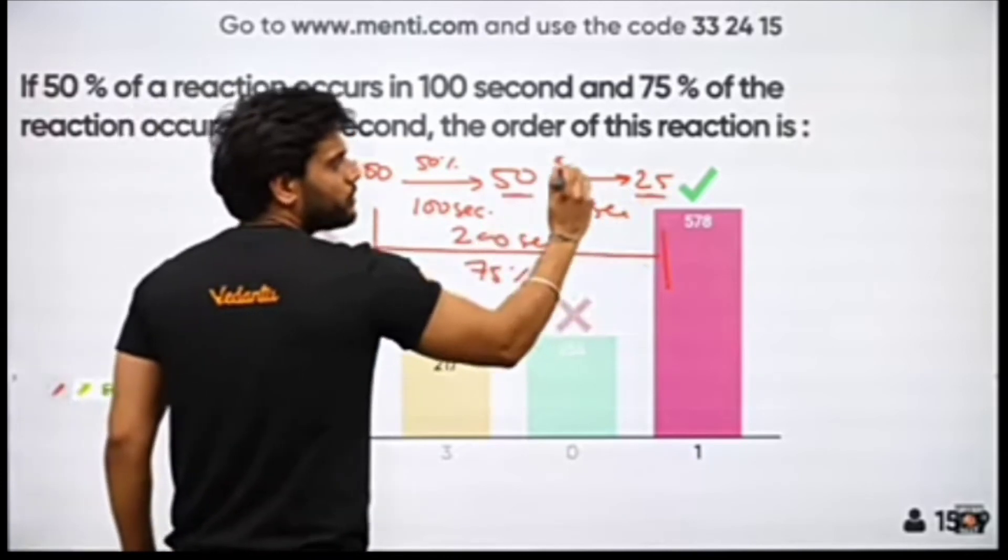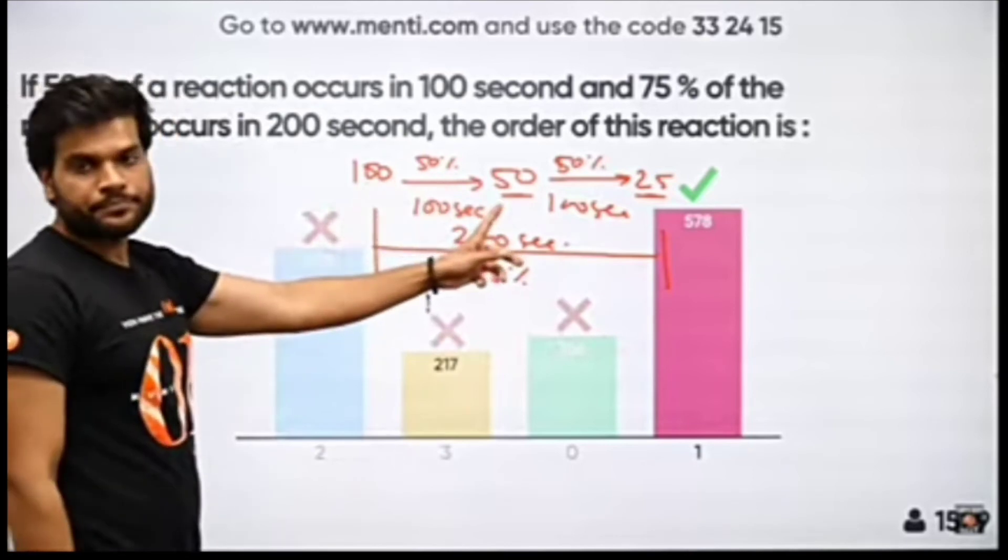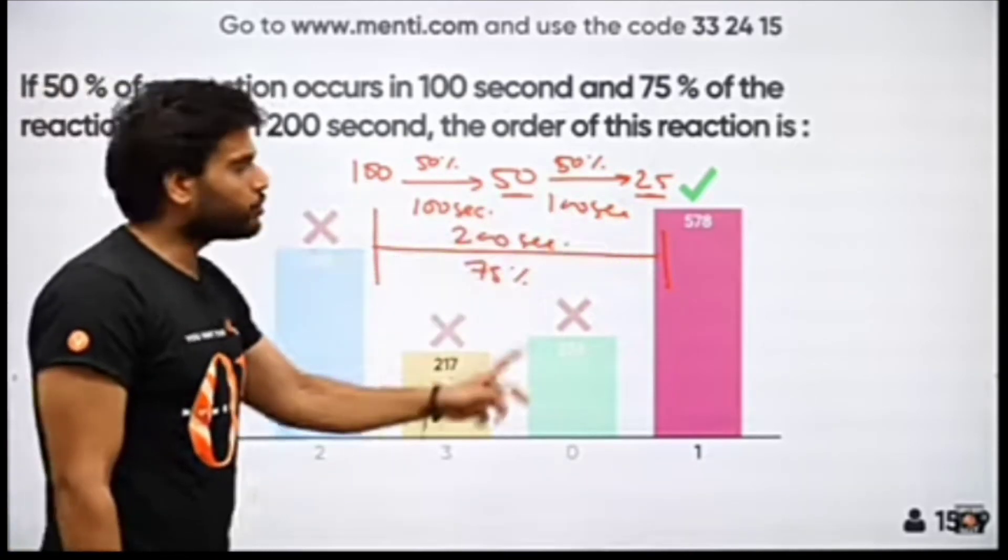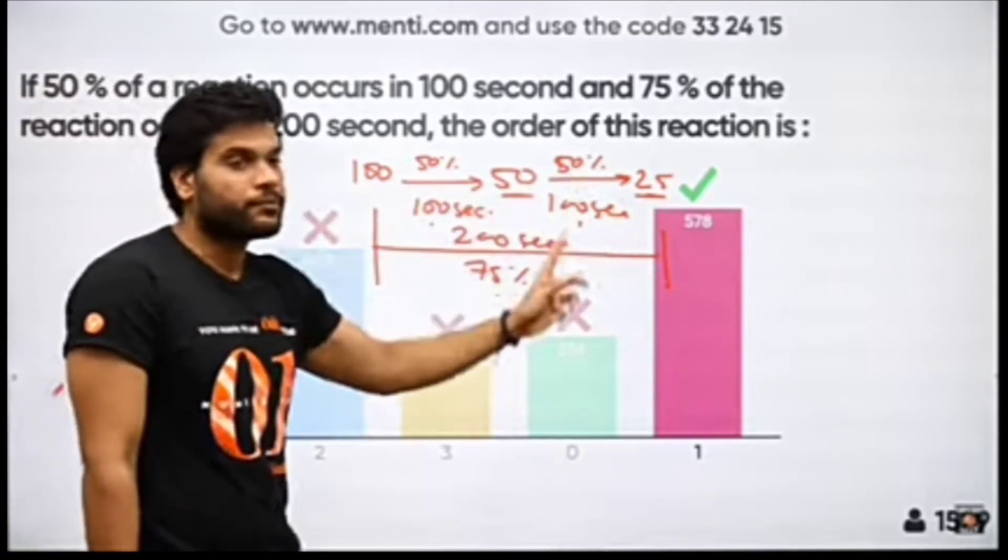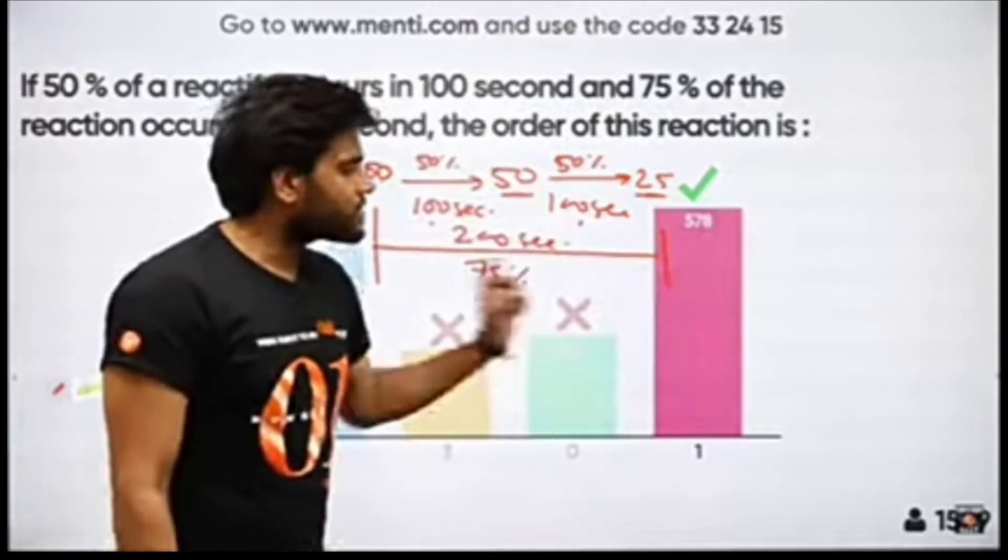Again, the initial concentration was so much, so this is also 50%. From 100 to 50. So 50% is over 100 seconds, 50% is over 100 seconds. When your percentage is finished at the same time, the first order of reaction. And this is the first order of reaction.